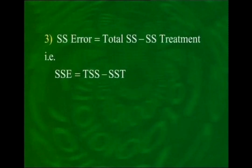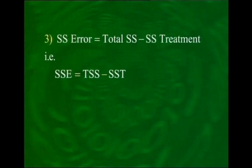The sum of squares for treatment (SST) = Σ_j (T_dot_j²) / r − CF, where r is the number of data values per column (number of rows). The sum of squares for error (SSE) = TSS − SST. This is because the total sum of squares can be partitioned into two distinct parts: SS for treatments and SS for error, so SST + SSE = TSS.